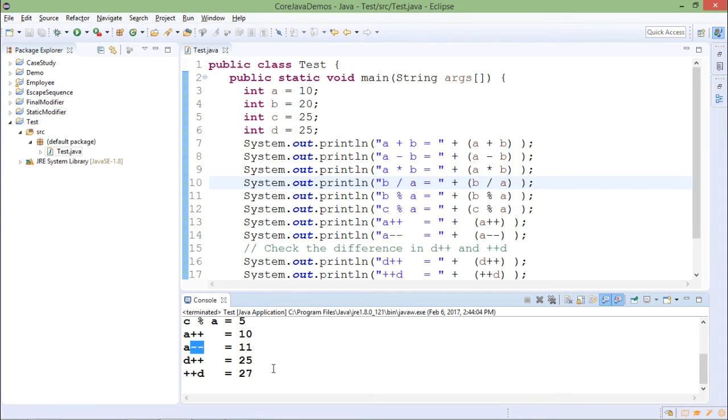For d, the original value is 25. d++ will print the value first (25) and then increment that to 26. This 26 value will be taken as input to ++d, so that is incremented to 27 from 26 because it is pre-increment, and then it is printed.